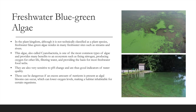Freshwater blue-green algae, also called cyanobacteria, resides in streams and rivers. It is one of the most common types of algae and provides many ecosystem benefits such as fixing nitrogen, producing oxygen, filtering water, and providing the basis for most freshwater food webs. It is sensitive to pH change and is a good indicator of water quality. However, excess nutrients can cause blooms that lower oxygen levels, making the habitat uninhabitable for certain organisms.